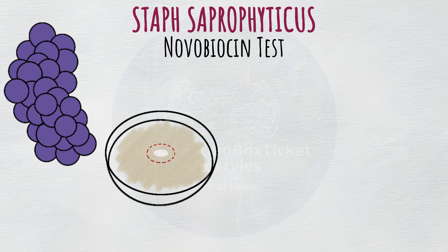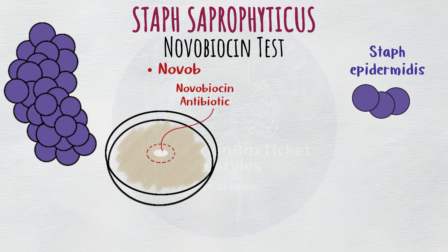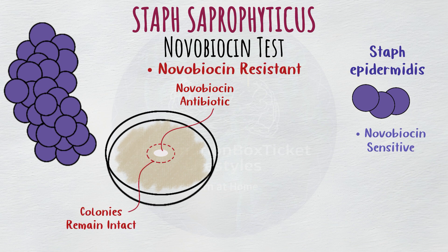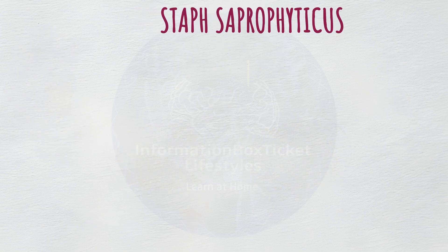Lastly, the novobiocin test is performed to differentiate Staph saprophyticus from Staph epidermidis. An antibiotic disc infused with novobiocin is added to the culture. Because Staph saprophyticus is resistant to novobiocin, its colonies do not break down, while Staph epidermidis is susceptible to novobiocin, which causes its colonies to disappear.